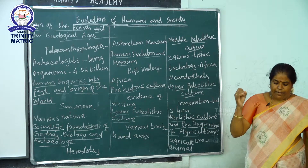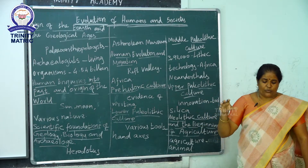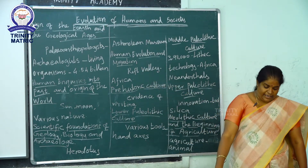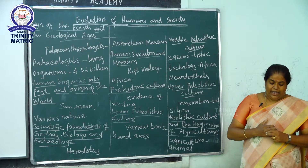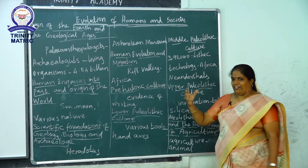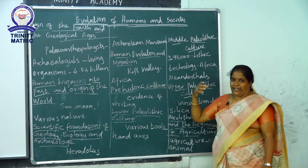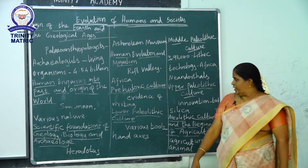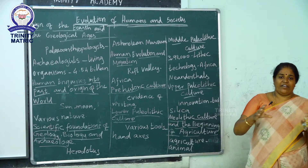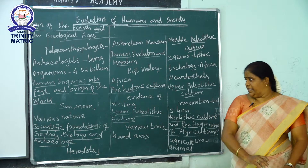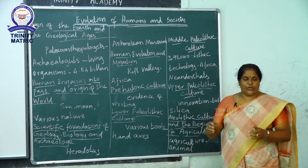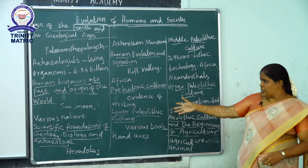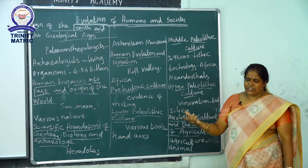Chimpanzees and gorillas show resemblance to humans. The Great Rift Valley, located in Africa, has many sites with evidence for the prehistoric period. Near the Rift Valley we can get more information about prehistoric culture. There is no written evidence about prehistoric culture — prehistoric period evidence is non-written.